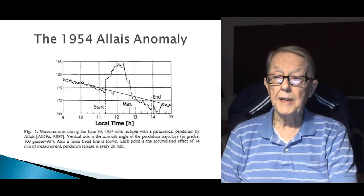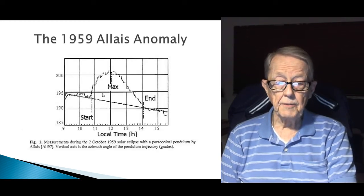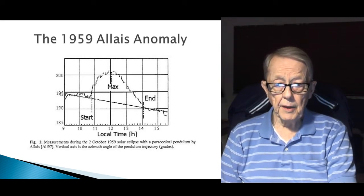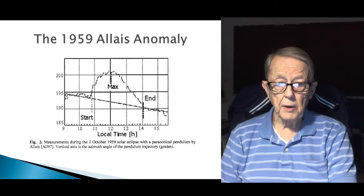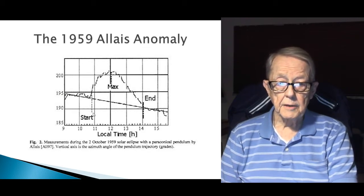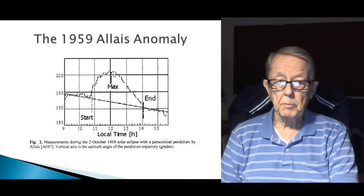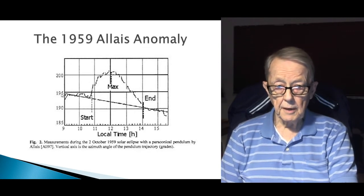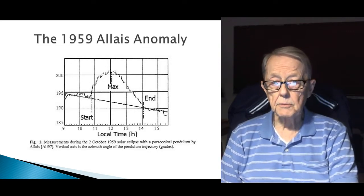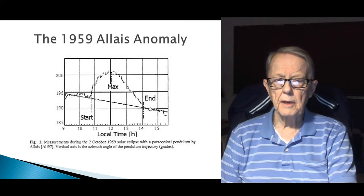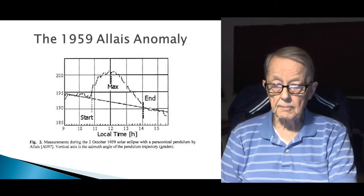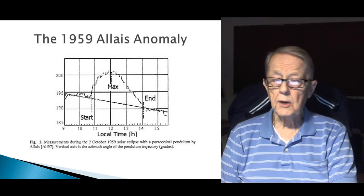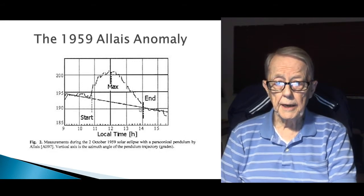And so they call it an anomaly. In 1959, he was doing it again. The pendulum should move this direction from 195 in the straight line. But at the start of the eclipse, at the point of maximum eclipse, and at the end, it's marked. And again, it jumps backwards. It does a totally different path. It's not similar at all, but nonetheless, there it is. It's hard to explain, and they call it an anomaly. It's the Allais Anomalies.